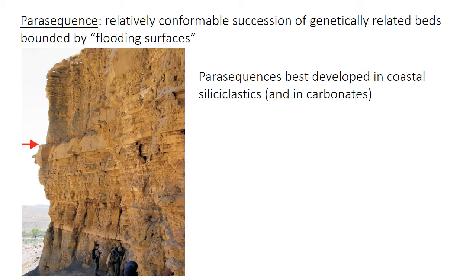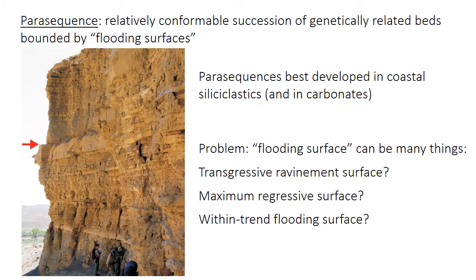The red arrow in the photo points to one of these flooding surfaces, which is unfortunately an ambiguous term. A flooding surface just requires rapid deepening of the facies, but it can be many things. The flooding surface could be a transgressive ravement surface, it could be the maximum regressive surface if there's little deposition during the early part of transgression, or it even could be a within-trend flooding surface if transgression actually began in the underlying coarser grain shoreface sediments. So it's best to identify the surface more specifically as an actual sequence stratigraphic or within-trend surface, and to avoid this ambiguous term of a flooding surface.